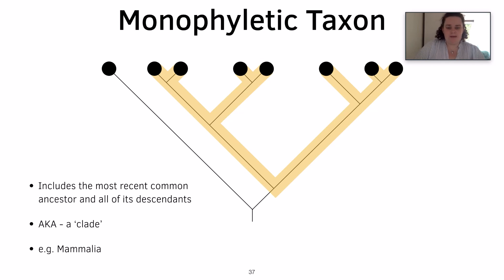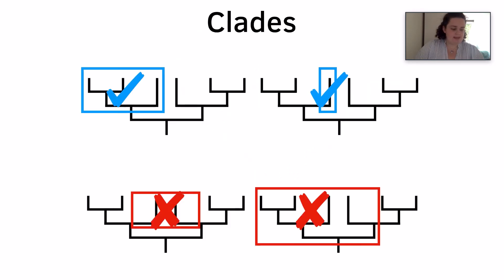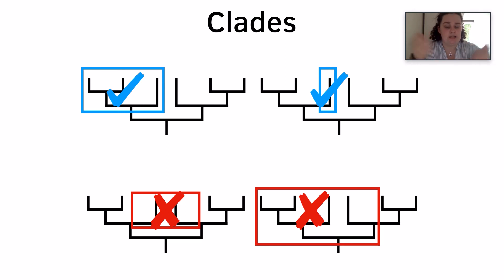An example of a monophyletic taxon is Mammalia. A clade is a grouping which includes a common ancestor and all of its descendants. The top two groupings shown are clades because they include a common ancestor. The bottom left does not include the last common ancestor, so therefore it is not a clade.